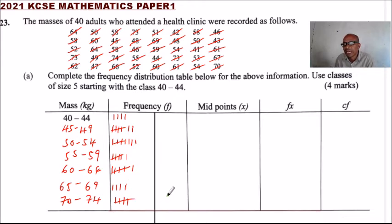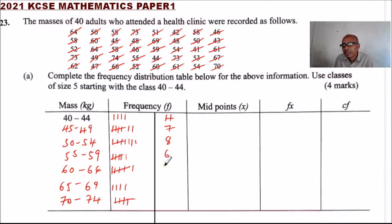Now we are going to fill the frequency. For the class 40 to 44 we have 4. For 45 to 49 we have 7. For 50 to 54 we have 8. For 55 to 59 we have 6. For 60 to 64 we have 7.